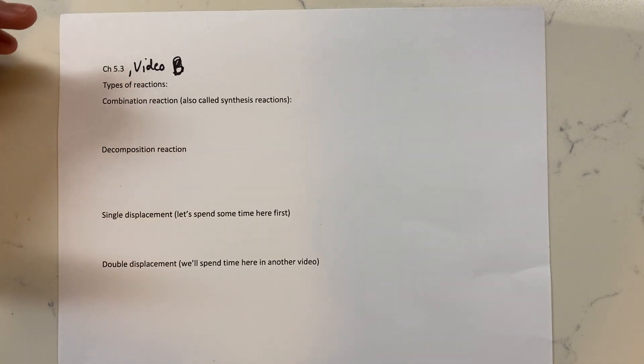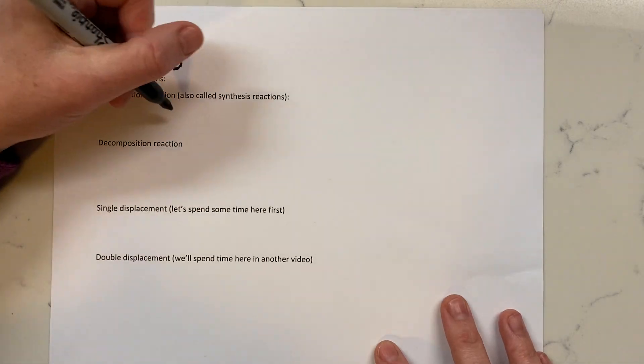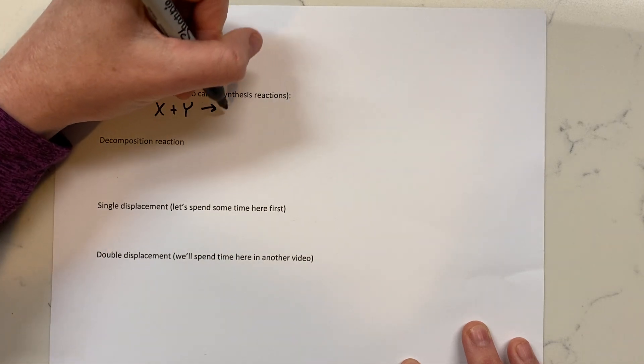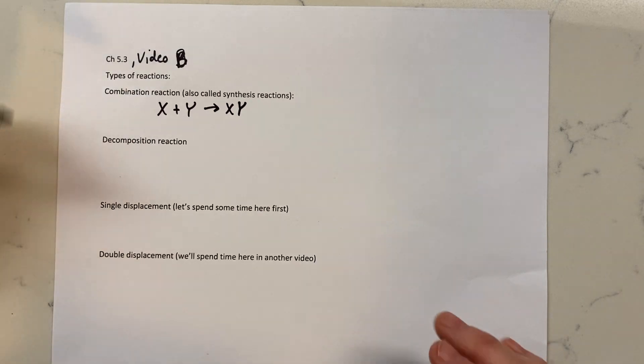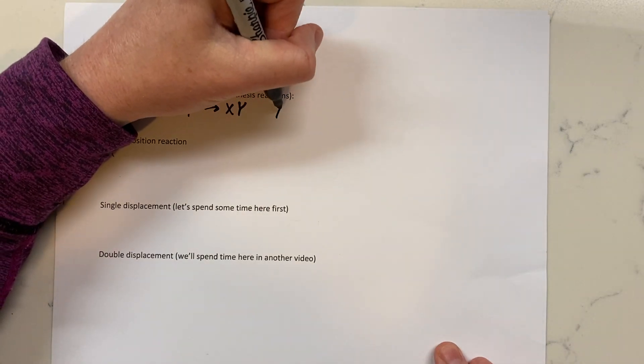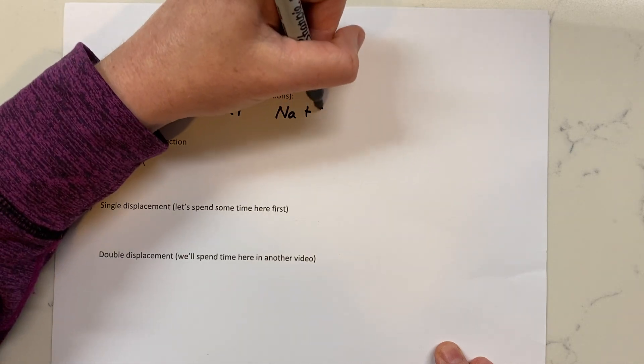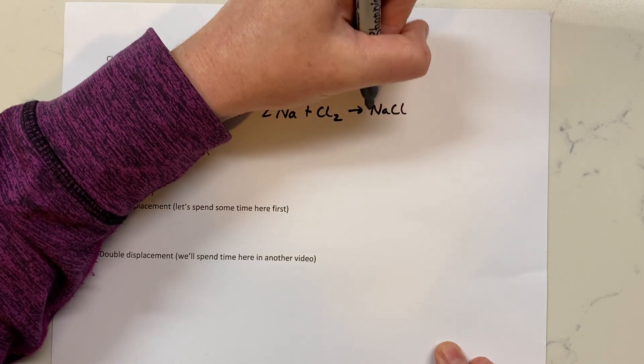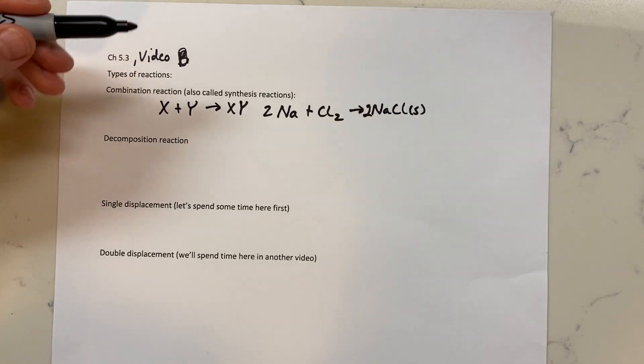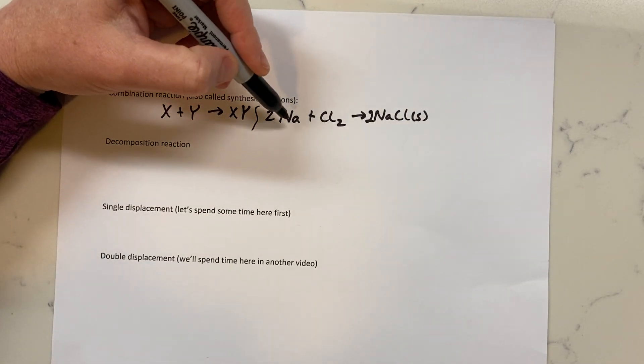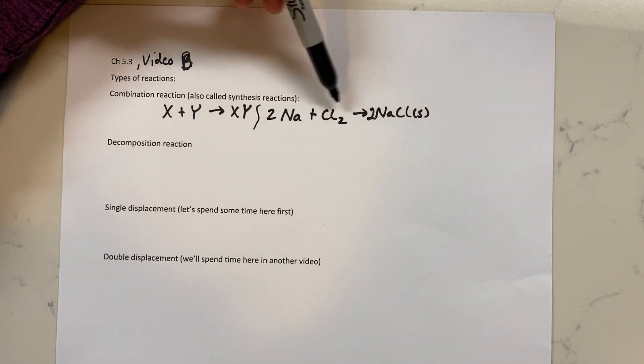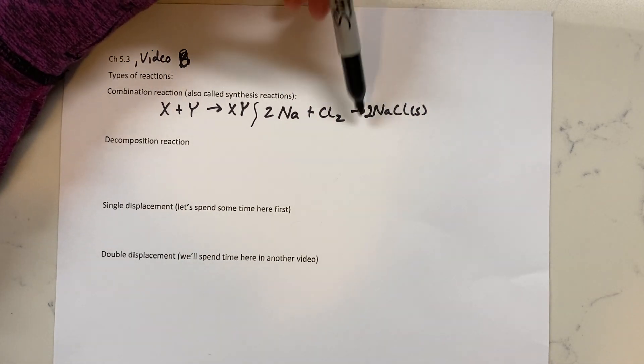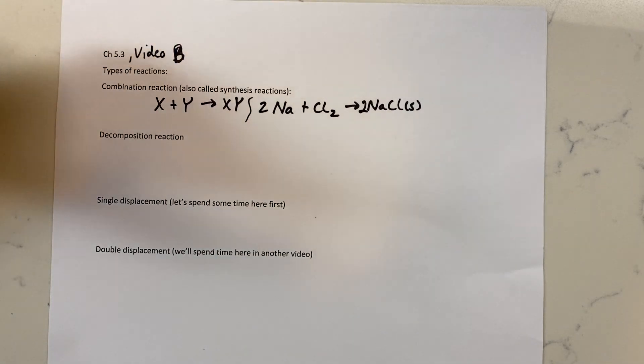Let's go ahead and start by looking at combination reactions. A combination reaction is when you have at least two components that combine and make something else. This is called a synthesis reaction because you're making something new. An example would be if you took sodium and chlorine gas, forming two sodium chloride. Sodium explodes in water, chlorine will kill you, but you mix them together and you get something delicious, table salt. You took two totally different things and combined them into something else that now has totally different chemical properties.